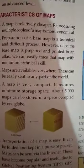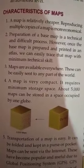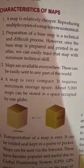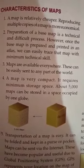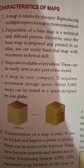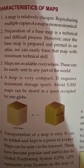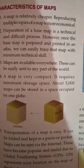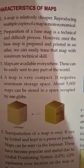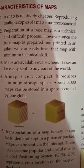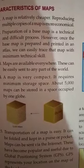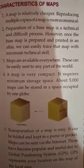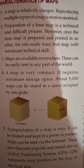Now let's talk about the characteristics of maps. A map is relatively cheaper — buying a globe costs much more, but a map is not that costly. Preparing a map is also a difficult process; however, once the base map is prepared and printed in an atlas, it is easy to trace that map with minimum technical skill. Maps are also available everywhere and can be easily sent to any part of the world since they are just on a piece of paper.